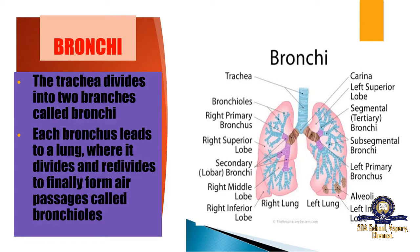The next step is the air entering the bronchi. Near the lungs, the trachea divides into two branches called bronchi. Each bronchus leads to a lung. The bronchi then re-divide to finally form air passages called bronchioles. As shown in the picture, the bronchi divide the air into two sides toward the lungs, sending air into the small bronchioles where it filters the mixture of gases.